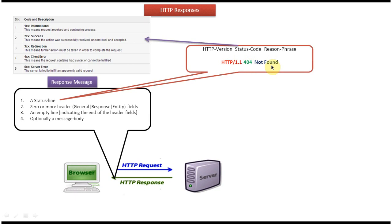There are five types of status codes. The first one is the 100 series, the second is the 200 series, the third is the 300 series, the fourth is the 400 series, and the fifth is the 500 series. The 100 series is informational, meaning the request is received by the server and it is continuing the process. The 200 series means successful. The 300 series means redirection, so further action is required in order to complete the request.